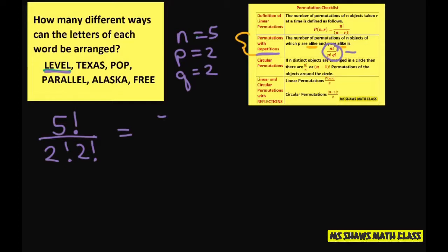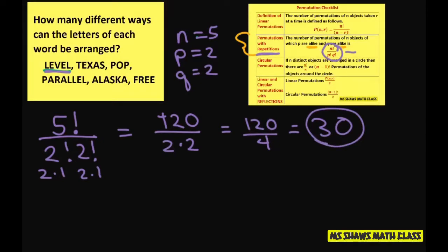We'll have, this is going to be 5 factorial is 120, and we're dividing this by 2 times 2. This is 2 times 1, 2 times 1. So 120 divided by 4 equals 30. And that's how many different ways the word can be arranged.